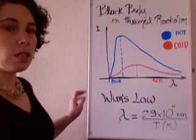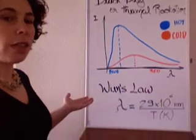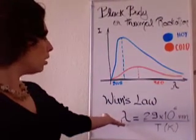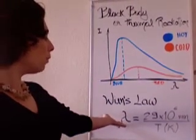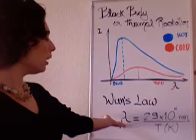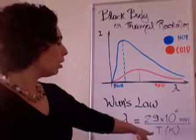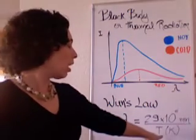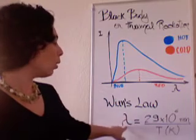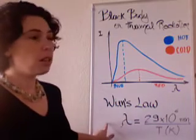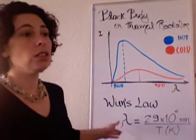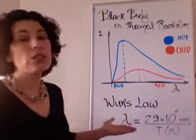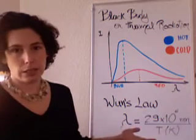Wien's law tells you that if you determine the peak of emission — the wavelength of the peak of emission — you can determine the temperature. Higher temperature means lower wavelengths and higher energy, and vice versa. And that's how you can measure the temperature of stars.